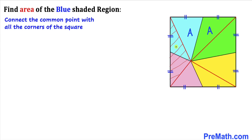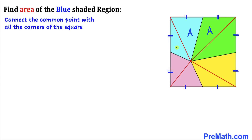Now let's focus on these next two triangles. We can see both of these triangles have the same base, and the height of both of these triangles is the same. Therefore we conclude the area for both of these triangles is the same. If I call the area for this blue triangle B, then the area for this pink triangle is going to be B as well.